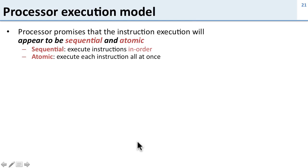Atomic means that we execute the instructions all at once. So we don't execute part of the first instruction and then part of the second instruction before finishing the first one.